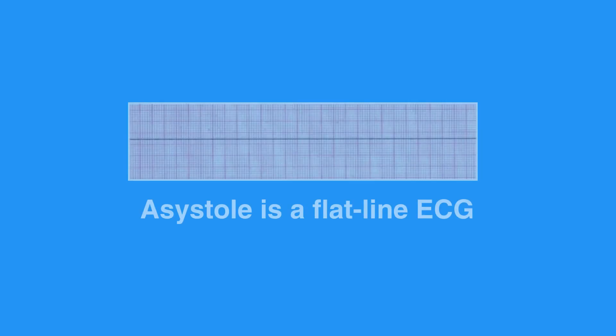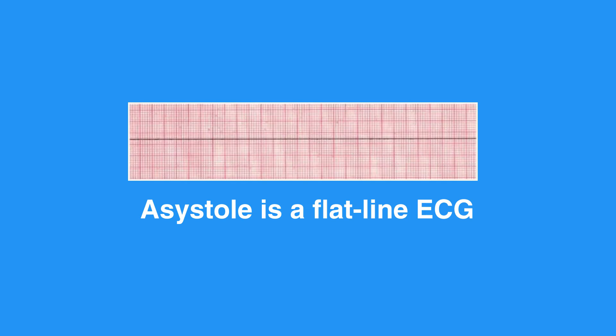Pulseless Electrical Activity, or PEA, and Asystole are related cardiac rhythms in that they are both life-threatening and unshockable. Asystole is a flatline ECG. There may be a subtle movement away from baseline, which is considered drifting flatline, but there is no perceptible cardiac electrical activity.